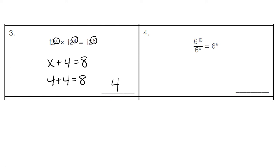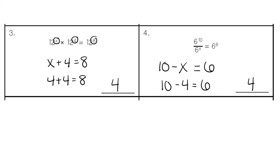For number 4, the base numbers are 6. We have the exponent 10, a missing exponent x, and then our equals with an exponent of 6. In this problem, because it's a division problem, we would be subtracting our exponents. So 10 minus what gives us the answer 6? That would be 4. 10 minus 4 gives us an exponent of 6.